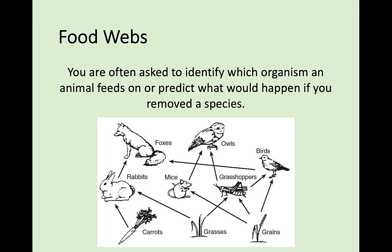For example, if you were to remove carrots from the food web, rabbits would not starve because they also eat grasses. If you removed birds, then foxes would probably eat more rabbits since they were eating both rabbits and birds. Every interaction has some sort of knock-on effect to the rest of the organisms in that ecosystem.